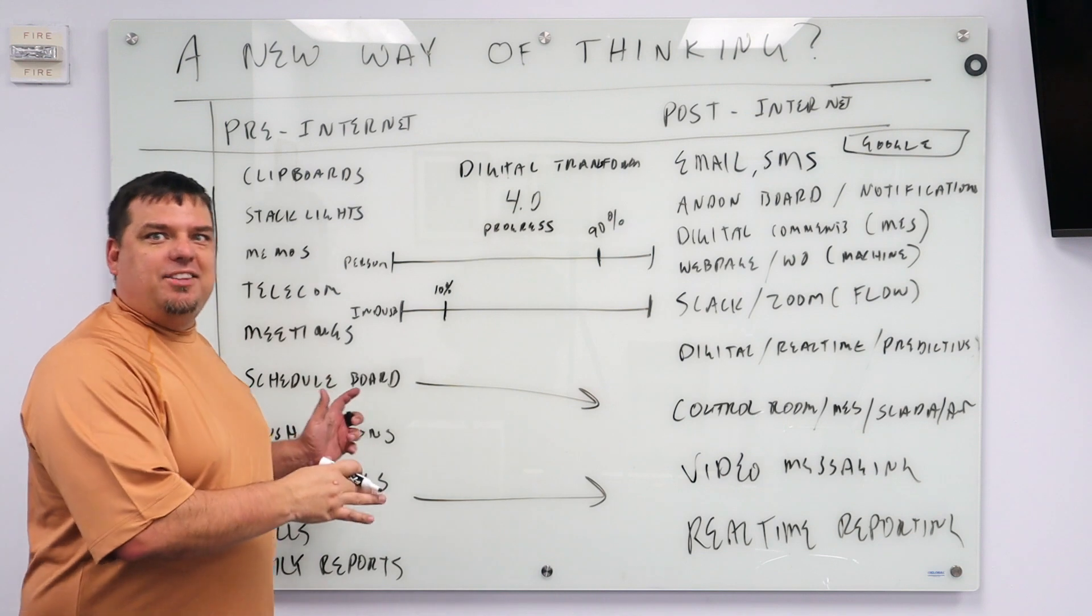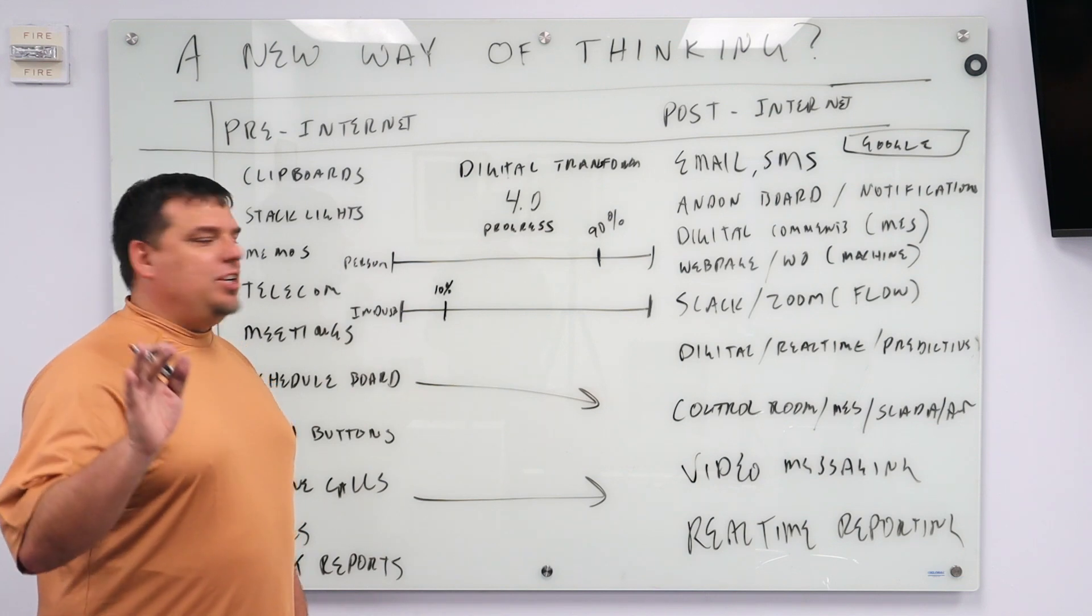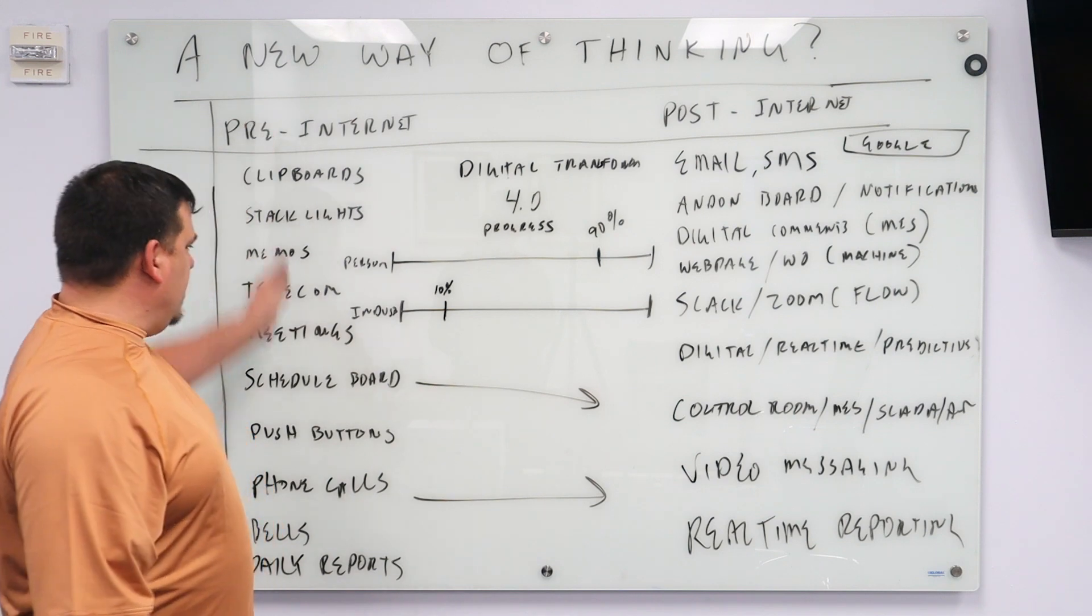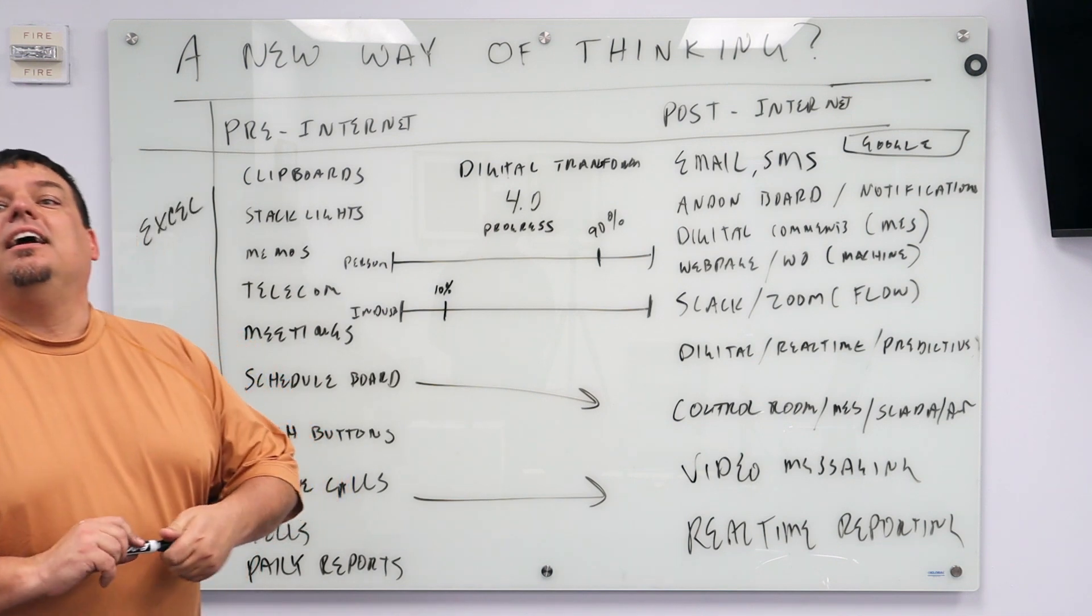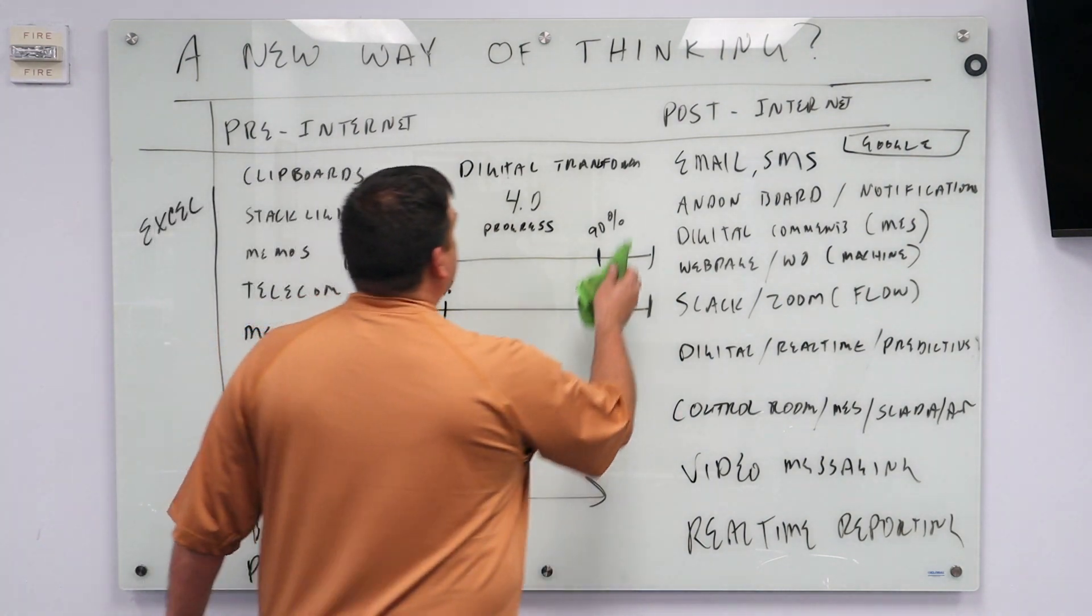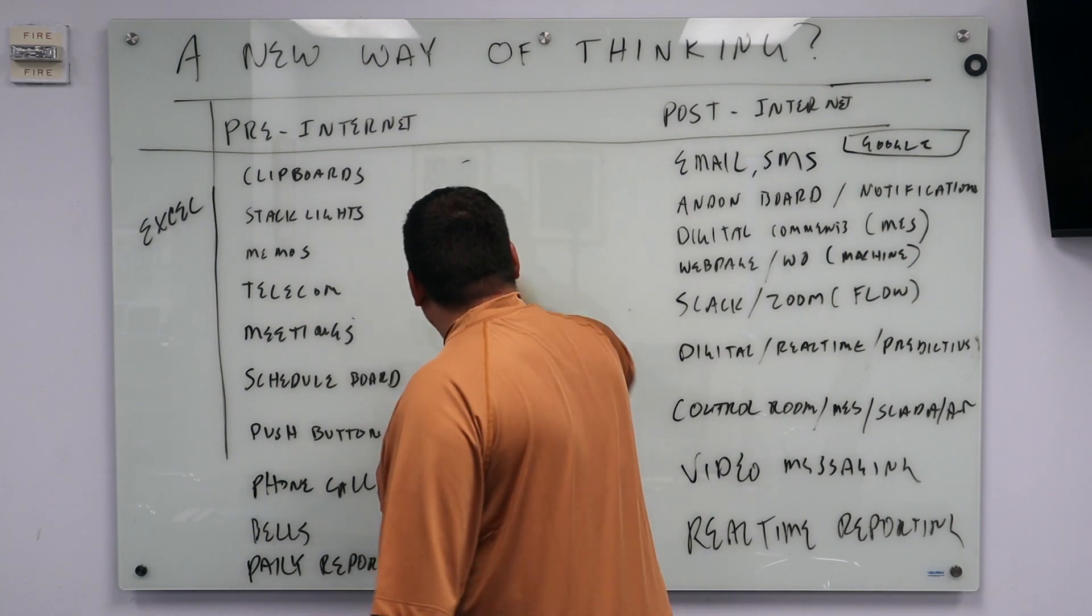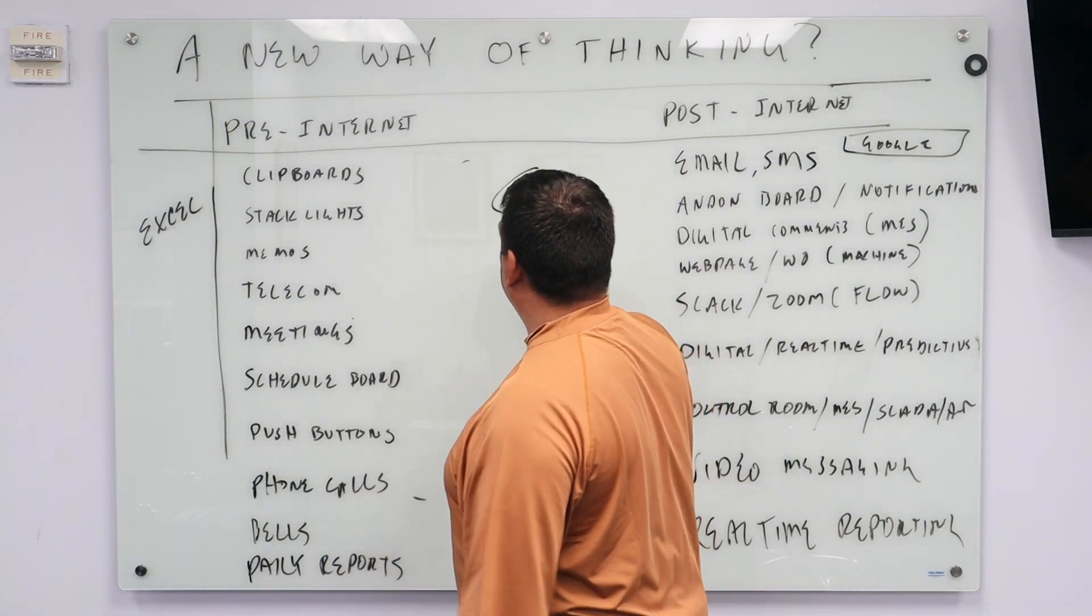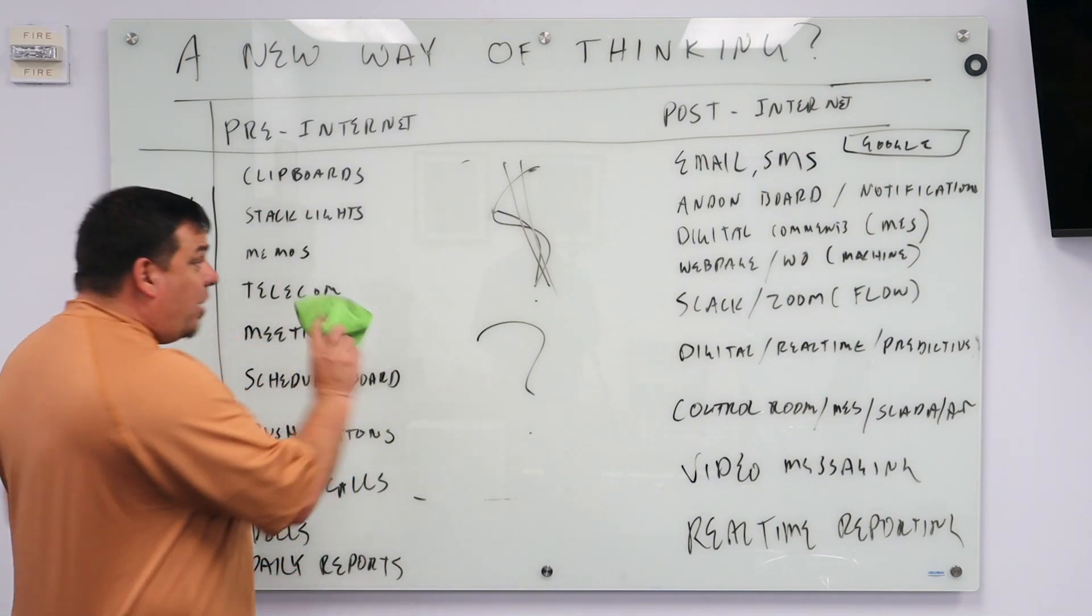Now we've already made the argument, the compelling argument, of why it is this stuff matters. The question is, why is it industry hasn't gone from the pre-internet days to the post-internet days? What's the reason? Industry is slow to change bureaucracy. They don't know how. You won't be able to find a single plant, a single organization that says, we don't need to do this. The answer is, how? The answer is, they don't know how. How do they do it?